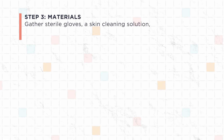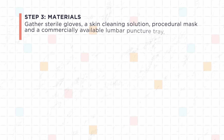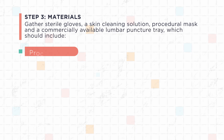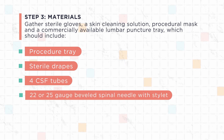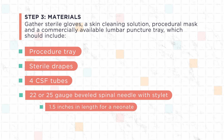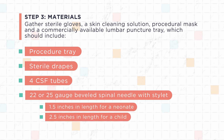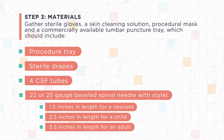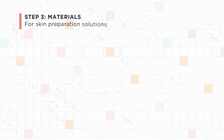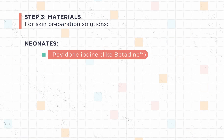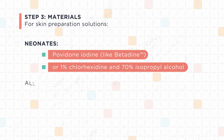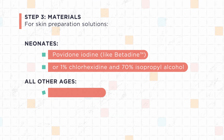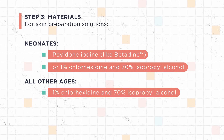Step 3: Materials. Gather sterile gloves, a skin cleaning solution, procedural mask, and a commercially available lumbar puncture tray, which should include a procedure tray, sterile drapes, 4 CSF tubes, and a 22 or 25 gauge beveled spinal needle with stylet — 1.5 inches in length for a neonate, 2.5 inches for a child, and 3.5 inches for an adult. For skin preparation, neonates have sensitive skin and need povidone iodine such as betadine, or 1% chlorhexidine and 70% isopropyl alcohol. The preferred solution in any other age group is 1% chlorhexidine plus 70% isopropyl alcohol.